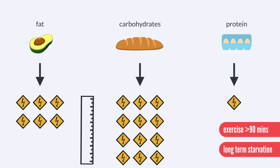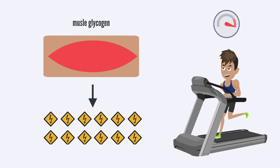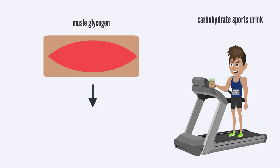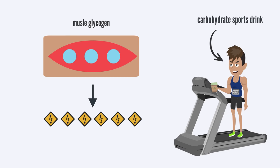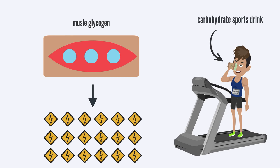Moreover, the power generated by fat is only half that of carbs. Thus, depletion of muscle glycogen considerably decreases a muscle's maximum aerobic power output. Therefore, maintaining adequate glycogen takes on an added importance at high intensities for prolonged efforts.